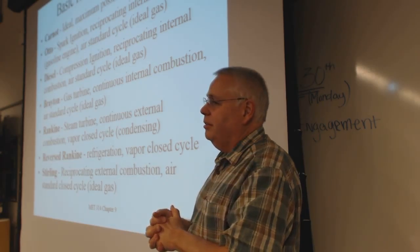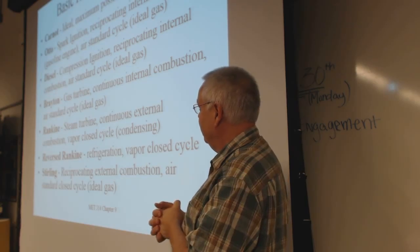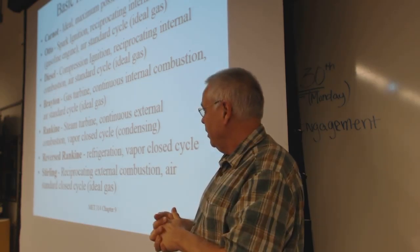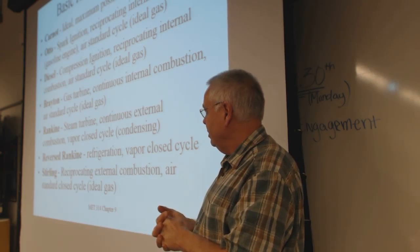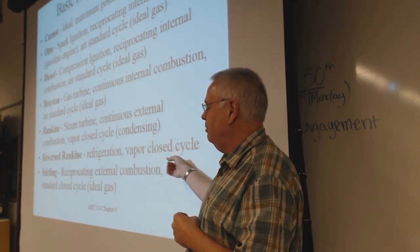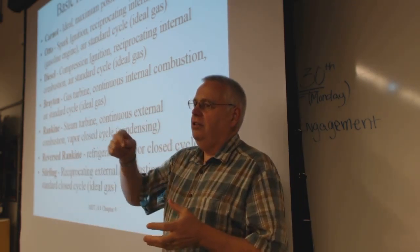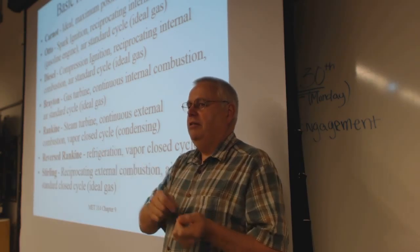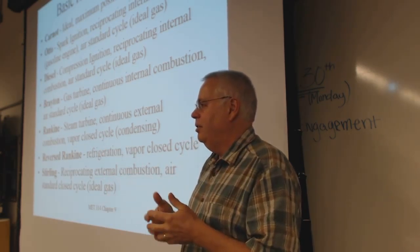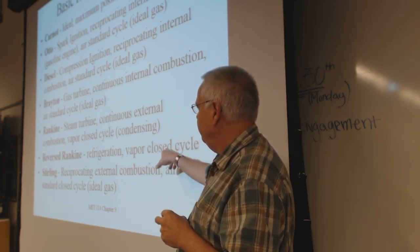There's the Otto cycle for gasoline engines, the diesel cycle for compression ignition, the Brayton cycle used for gas turbines, and the Rankine cycle for steam. If you run the Rankine cycle backwards, it's refrigeration. A Rankine cycle involves a phase change between liquid and vapor at some point in the process, and you're using that phase change energy, especially on the refrigeration side.